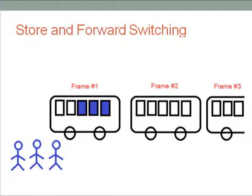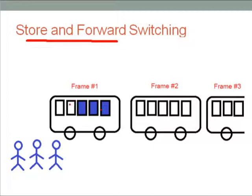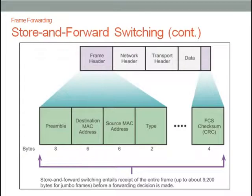Here is a simple analogy of how store and forward switching works. Assume the frames are like buses queuing to take passengers in a bus terminal. Frame number 1 is a bus right in front and it is half-filled. For store and forward switching, it will wait for all the passengers to board — meaning frame number 1 is not processed until it is fully filled with all the information.